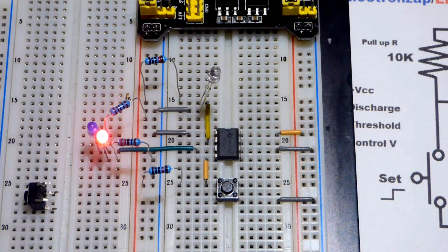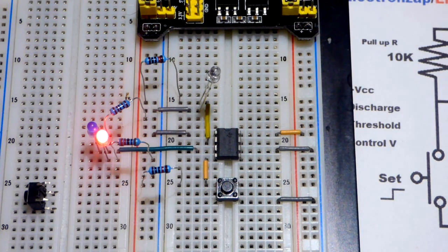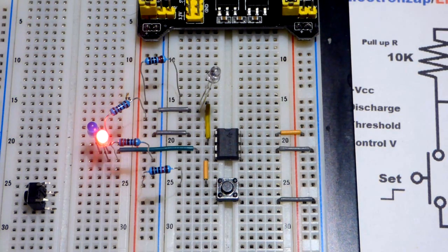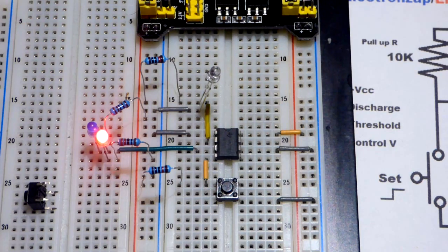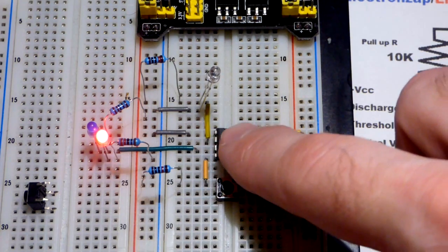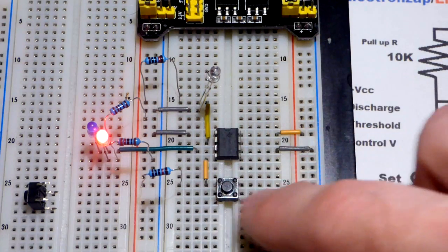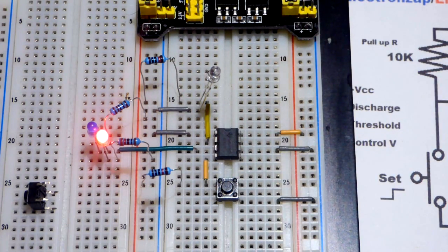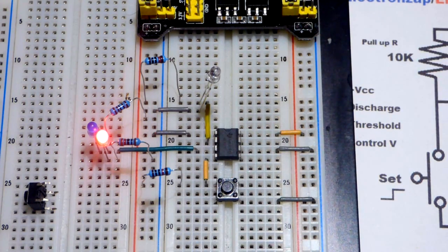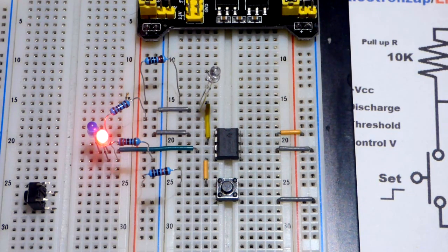So, in any case, hopefully you found that interesting. You can take a simple component and make a circuit work quite a bit differently. As long as you understand the electrical principles. All this 555 timer is waiting for at the trigger is a low signal, and at the reset, a low signal. And there's quite a few ways you can deliver that. Hope you found the video interesting. Thanks for watching. I will see you in the next one.